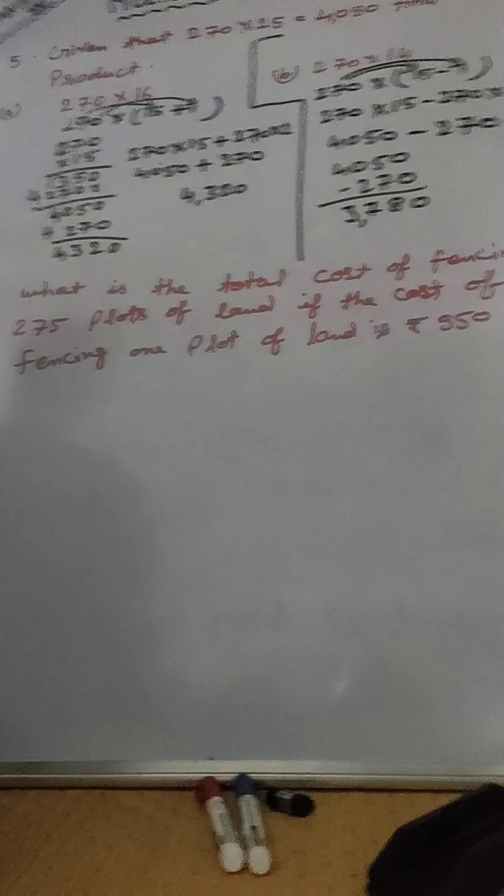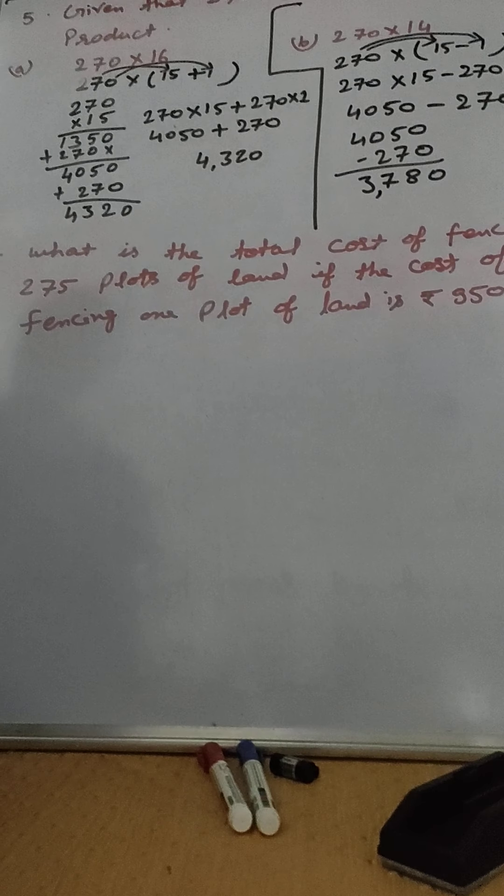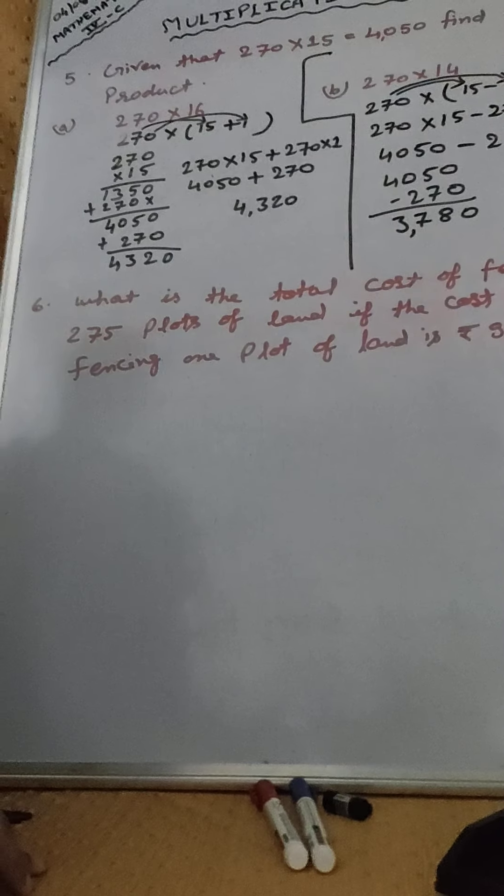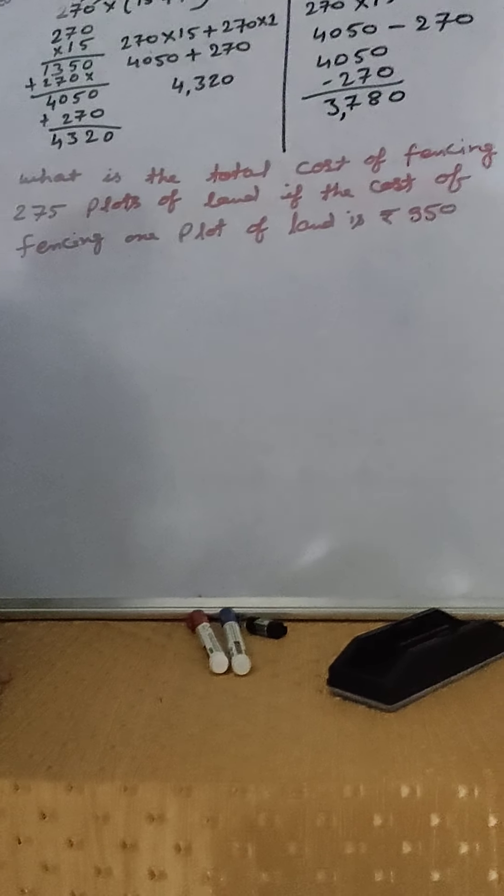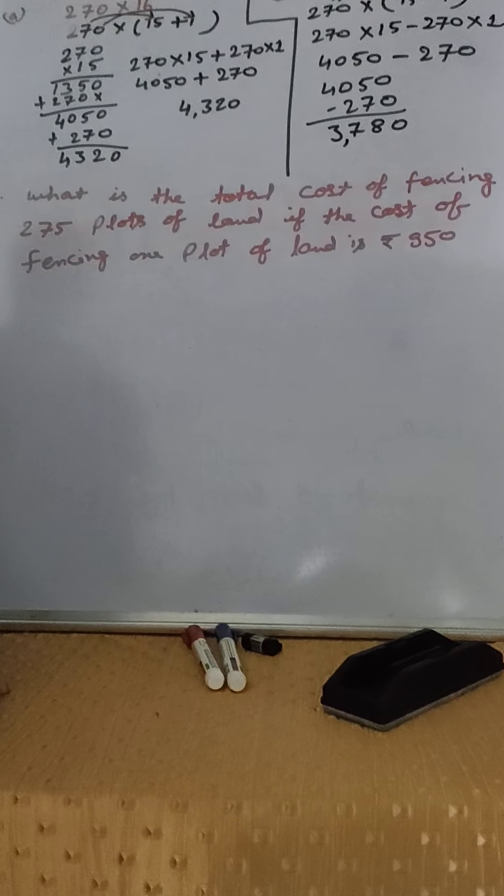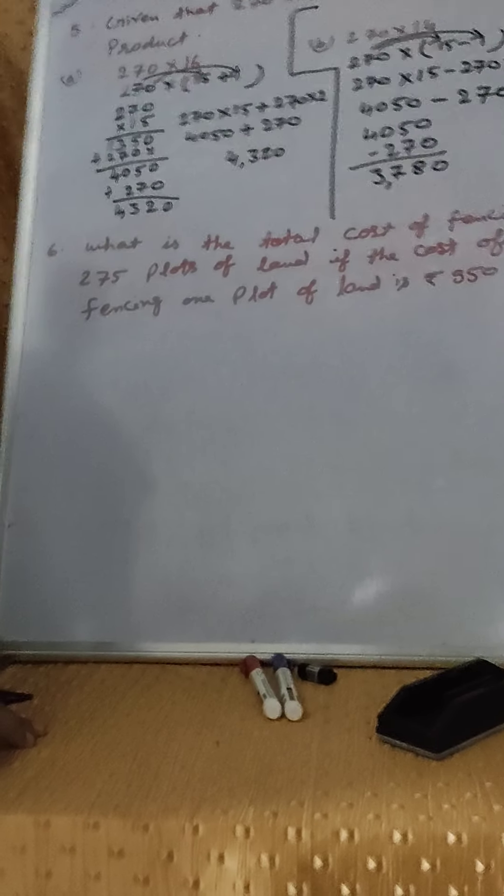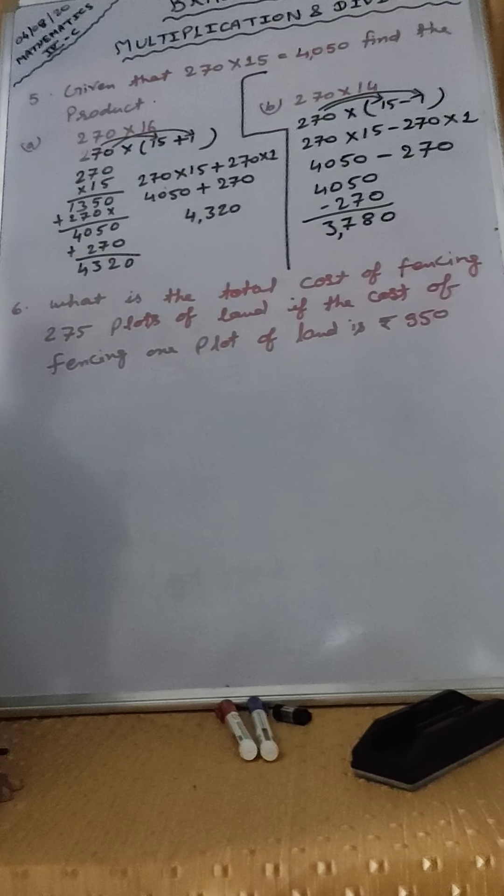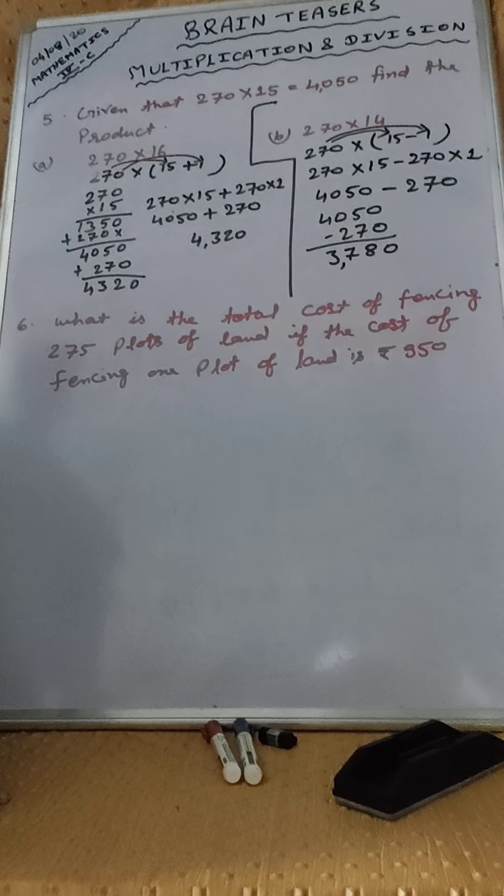Now, we will solve question number 6. What is the total cost of fencing 275 plots of land if the cost of fencing 1 plot of land is Rs. 950? Look here children. When we have to find out the total cost of anything, we should multiply. And when we have to find out the cost of 1 item, we should divide.